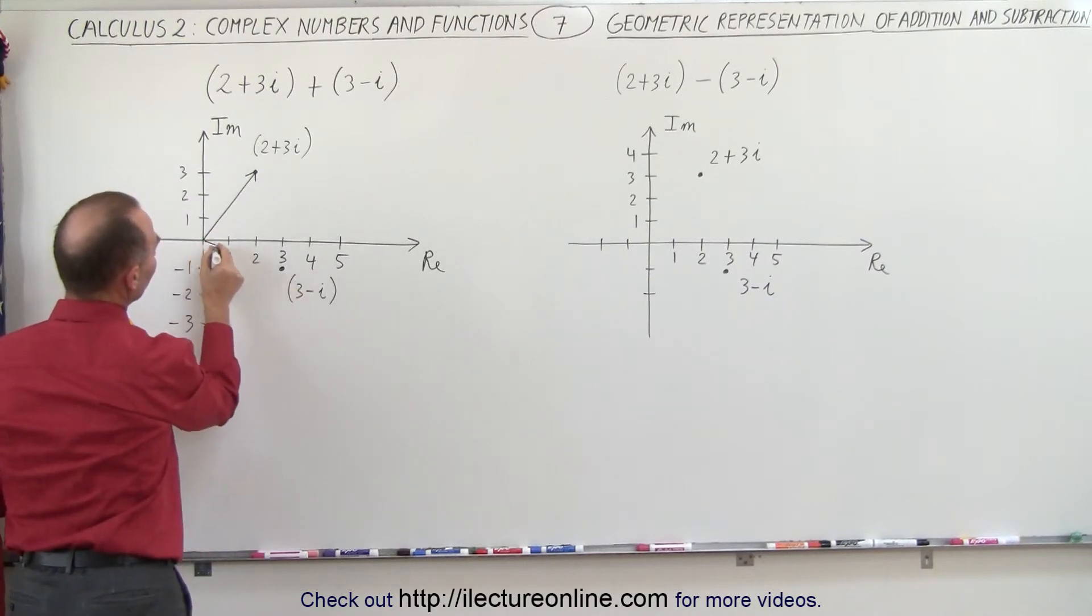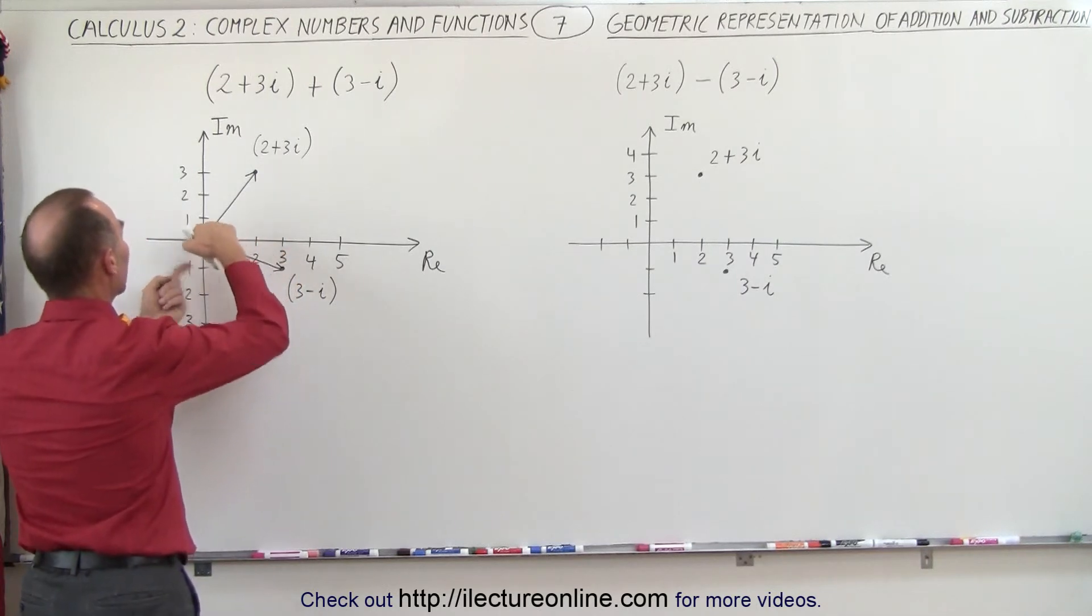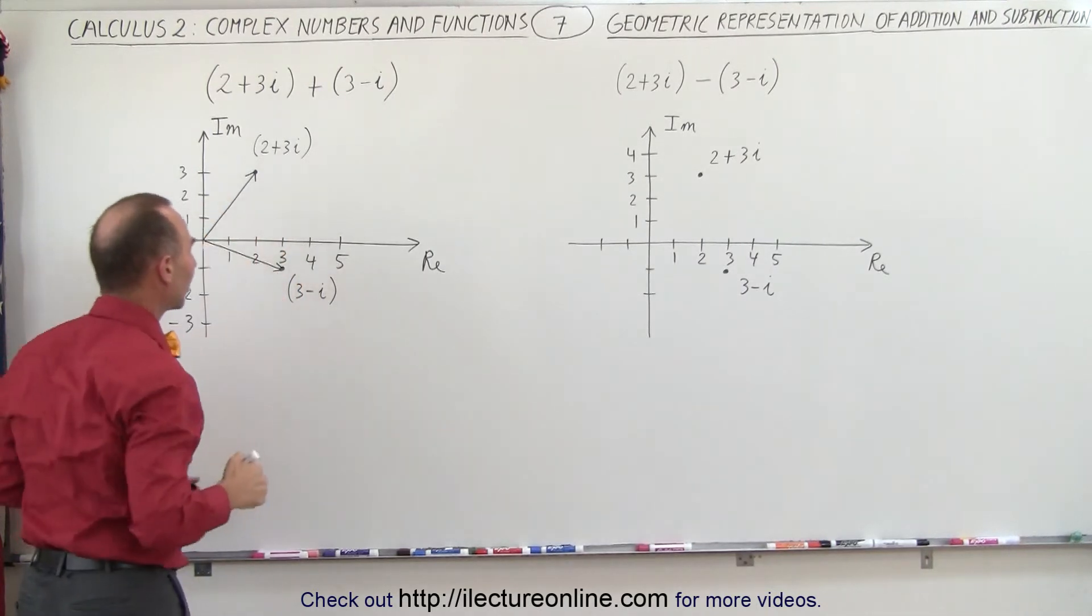Likewise here we can draw a vector, and notice that we have a real component of 3 units and an imaginary component of 1 unit in the negative direction.